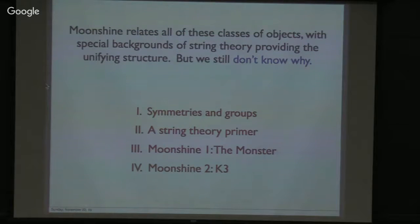So moonshine is really just the name for the subject that relates all of these classes of objects. And the way they're related is special backgrounds of string theory, some solution of the equations of motion of string theory, relates all the classes of objects and provides the unifying structure. An important point about this talk, as opposed to many colloquia, is that there will be no triumphant punchline at the end. We know the relations are there. I'll present some of the evidence, and it's overwhelming evidence, but we don't know why. So the talk's introductory. I'll start with a very elementary discussion of symmetries and groups. Then I'll give a string theory primer. So this is the 10-minute version of Polchinski's two volumes. I'll take you in the study of moonshine to about the mid-1990s, when the first case was understood. And in fact, a lot of the best work on this was done here in Berkeley. And then I'll tell you about why I'm giving this talk today, about a reincarnation of this subject, a reinvigoration that's really taken place in the last four or five years.